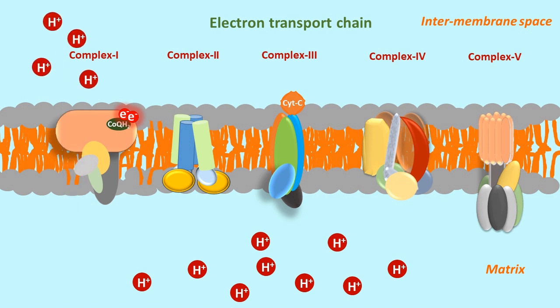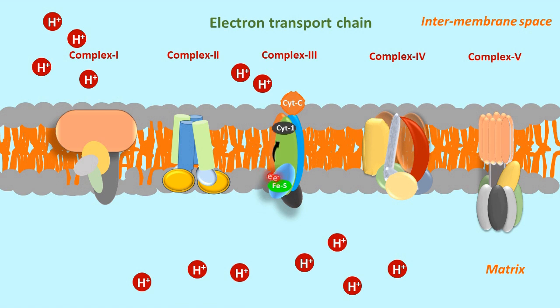After that, ubiquinol transfers these two electrons to complex 3 by oxidizing into ubiquinone accompanied with pumping of 2 more protons from matrix to periplasm. In complex 3, the electrons are accepted by iron sulfur cluster by pumping again 2 protons from matrix to periplasm. A total of 4 protons are now transferred at complex 3.